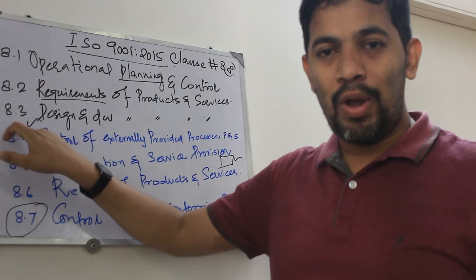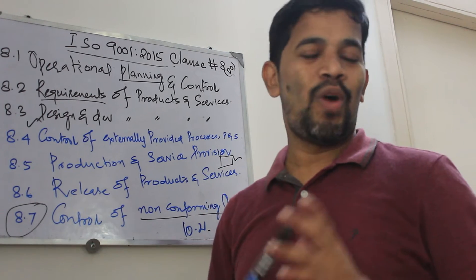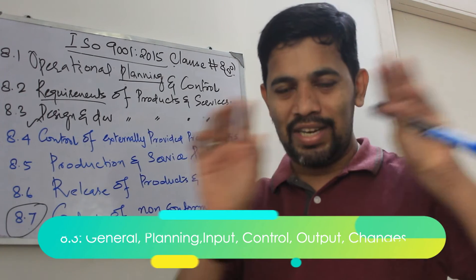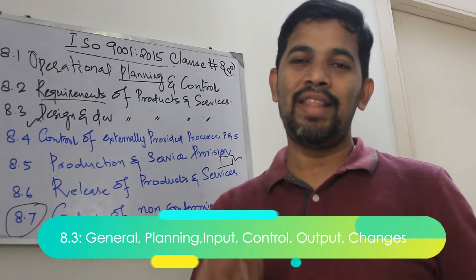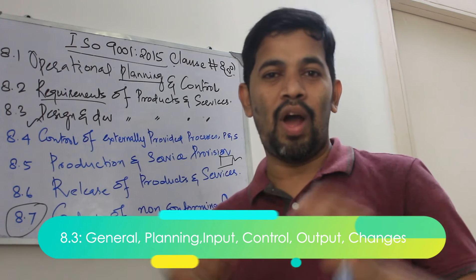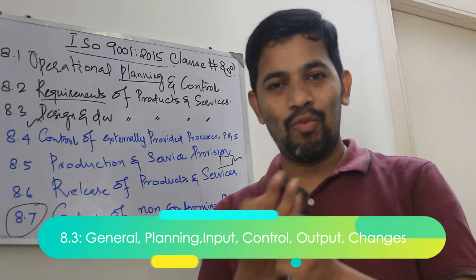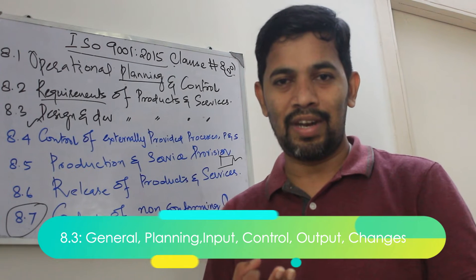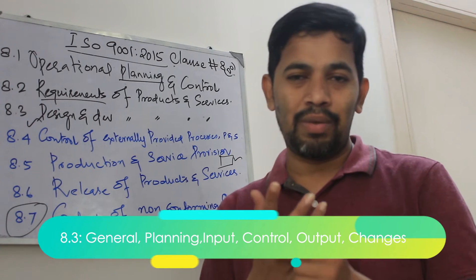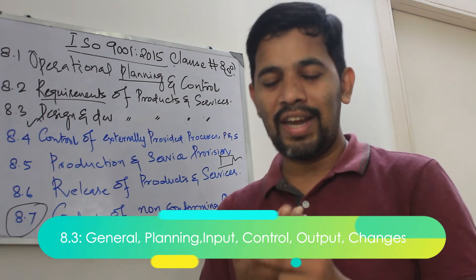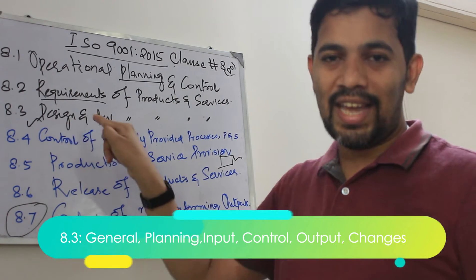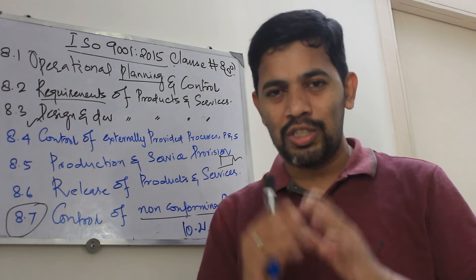8.3 has got six subclasses. The first is 8.3.1 General — when you say design and development, what is that? It gives a briefing. Then there is input — design and development input — what are the things you need to have. Then once you do an input, you do processing, then you do a control, then you have an output, and then changes can happen.